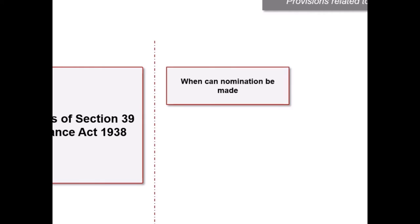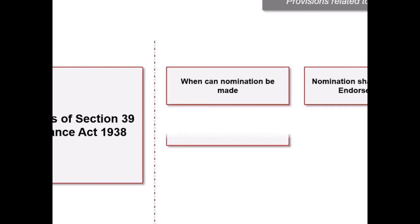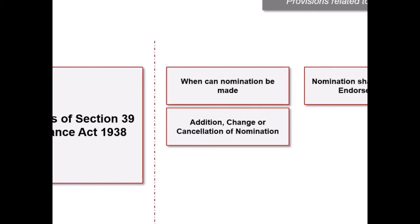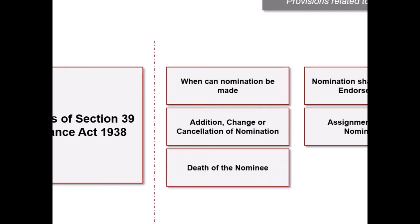Under Section 39 of the Insurance Act, 1938, the following provisions have been provided. First, the holder of a policy may nominate the person or persons to whom the money secured by the policy shall be paid in the event of her death. Second, nomination shall be done by endorsements. Third, it gives the procedure to add, change or cancel the nomination. Fourth, it says that the assignment cancels nomination. Fifth, it describes what happens when the nominee dies. And sixth, it describes that nomination is not applicable to Section 6 of MWP Act.